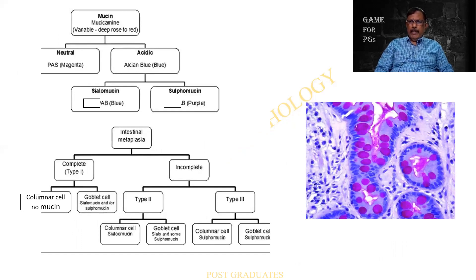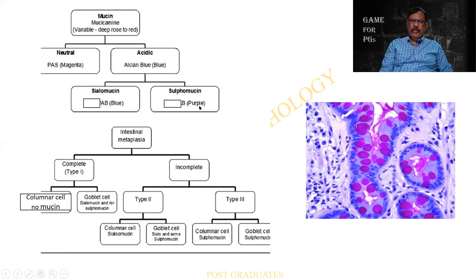This is a better flow diagram — more logical. Mucin, and if you are going to stain it with mucicarmine, it will be somewhat rose to red. If it is going to be a neutral mucin, PAS takes up a magenta color. Acidic mucin with Alcian Blue gives a blue color. Sialomucin — again, Alcian Blue gives a blue color. And sulphomucin — Alcian Blue gives a purple color. This is one way of tackling it.